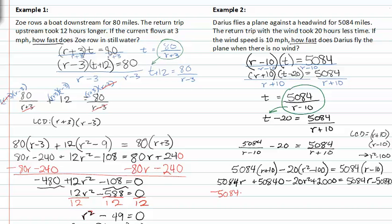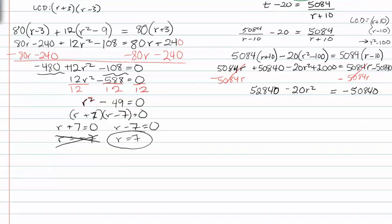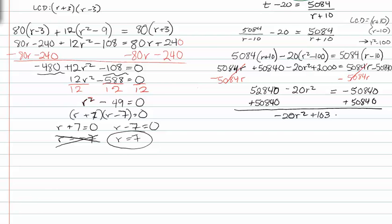We subtract five thousand eighty four r from both sides and those terms add to zero. We get fifty two thousand eight hundred forty minus twenty r squared equals negative fifty two thousand eight hundred forty. Adding fifty two thousand eight hundred forty to both sides gives us negative twenty r squared plus one hundred five thousand six hundred eighty equals zero.